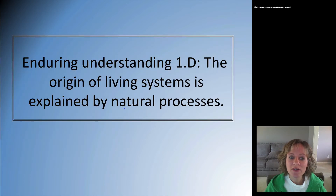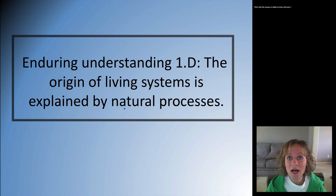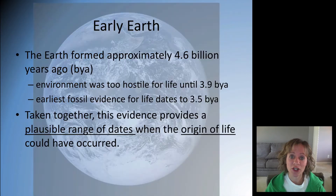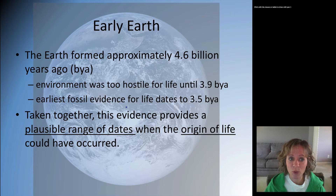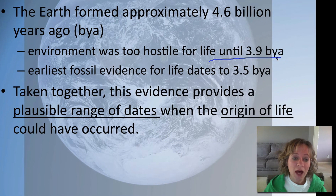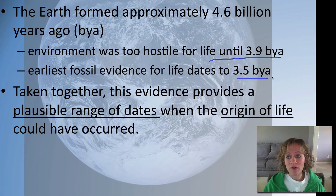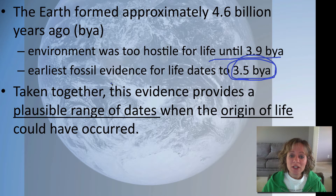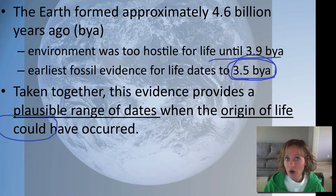The enduring understanding is that the origin of living systems is explained by natural processes. We don't know for sure, but we're going to look at various hypotheses for how it happened — all of these are natural processes that could have occurred. The early Earth formed approximately 4.6 billion years ago, but was too hostile for life until about 3.9 billion years ago. The earliest fossil evidence is from 3.5 billion years ago, giving us a plausible range for when the origin of life occurred.